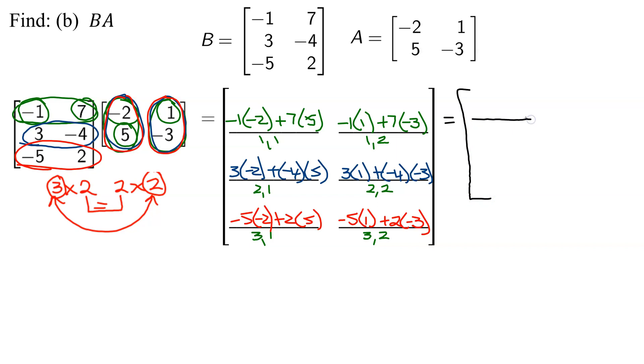So looking at my first element, negative one times negative two is two plus seven times five is 35. Next one, negative one times one is negative one plus seven times negative three is negative 21. Next one, three times negative two is negative six, and negative four times five is negative 20. Three times one is three, plus negative four times negative three is positive 12.